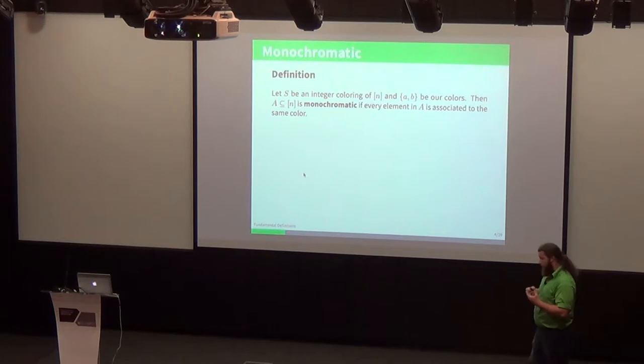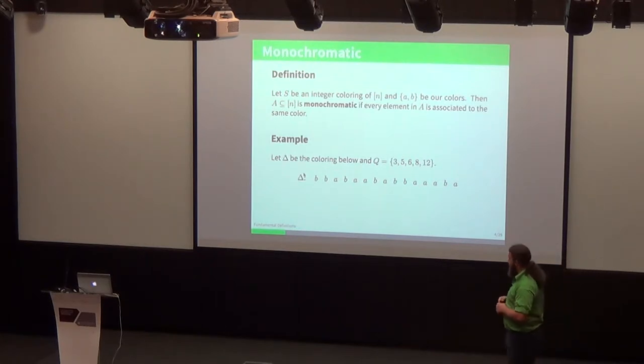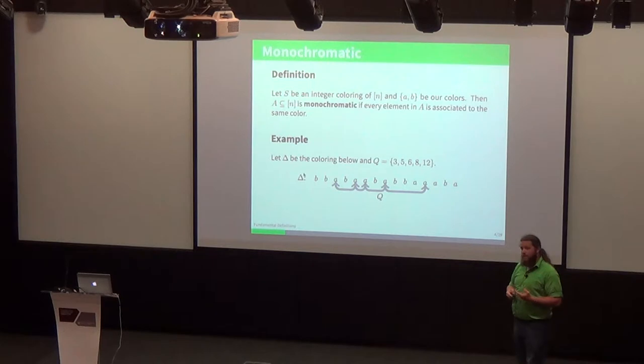The next definition is monochromatic, which just means we have a set of integers associated with the same color. For example, if we have the set Q containing 3, 5, 6, 8, and 12, indicated with the arrows there, we can look at those and see that they're all colored with the color A. So that set Q is monochromatic.